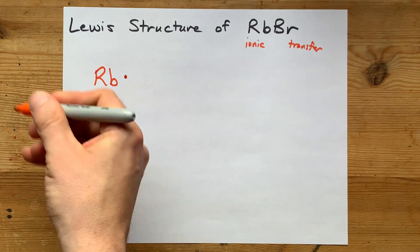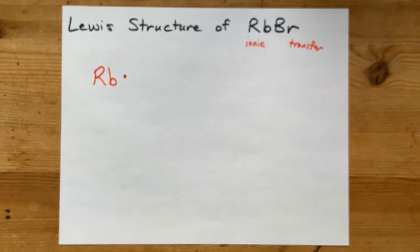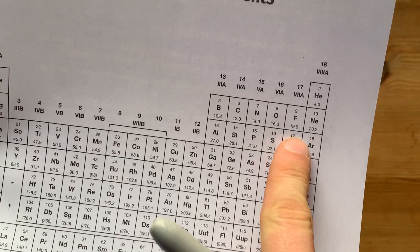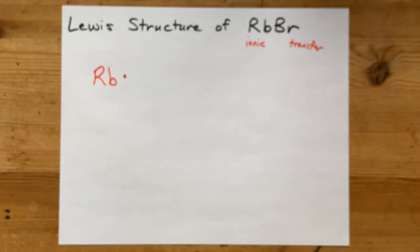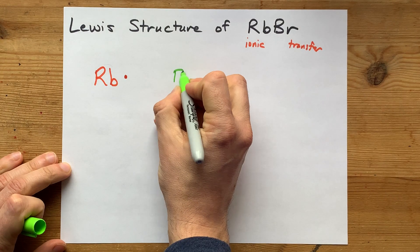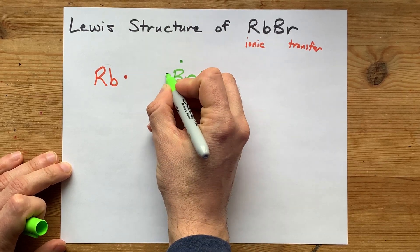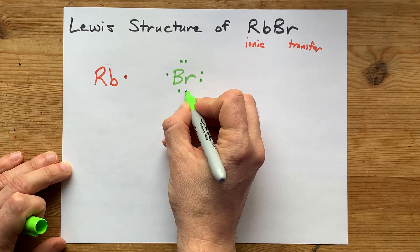So I'm going to draw it here with its one valence electron, and then bromine here in group 17 has seven electrons in its outer shell. One, two, three, four, five, six, seven.